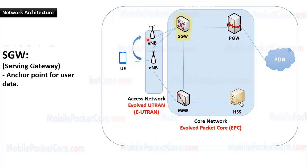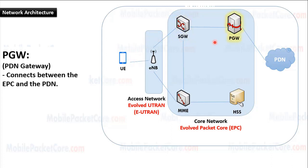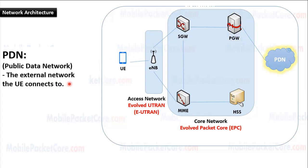Then the SGW connects to the PGW, which refers to PDN Gateway. The PGW connects between the core network and the PDN. Finally, the PDN refers to Public Data Network — it is the external network the UE connects to, whether it is the internet or any other network.